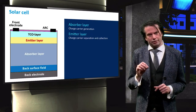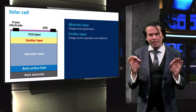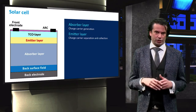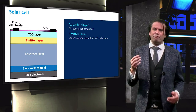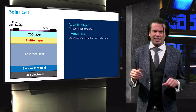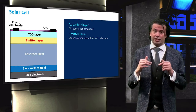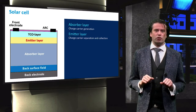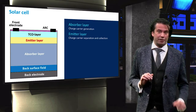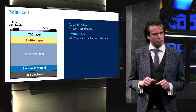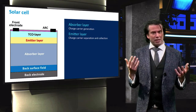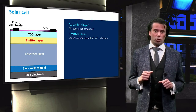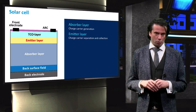Next is the emitter layer. The emitter layer is crucial for charge carrier separation and collection. It functions as a selective membrane that allows minority charge carriers — in this case electrons — to move through, but resists the movement of majority carriers, in this case holes. Without the emitter layer, generated charge carriers would simply move around in the absorber layer until they recombine.